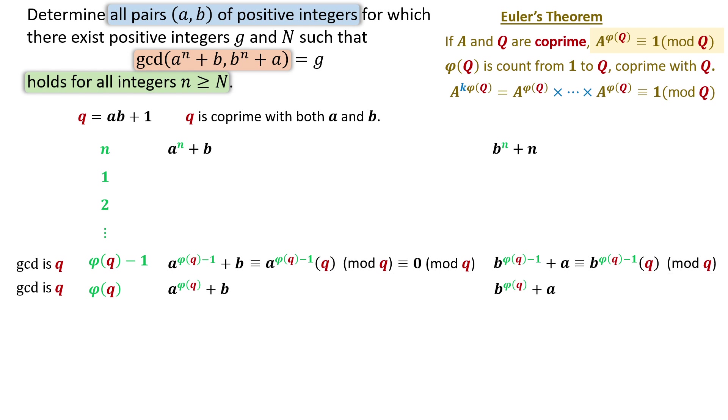If q divides these two expressions, it also divides the difference between them. Since q and a are co-prime, q must divide a minus 1. So we have a equals 1 mod q. From the second expression, we get b equals 1 mod q.